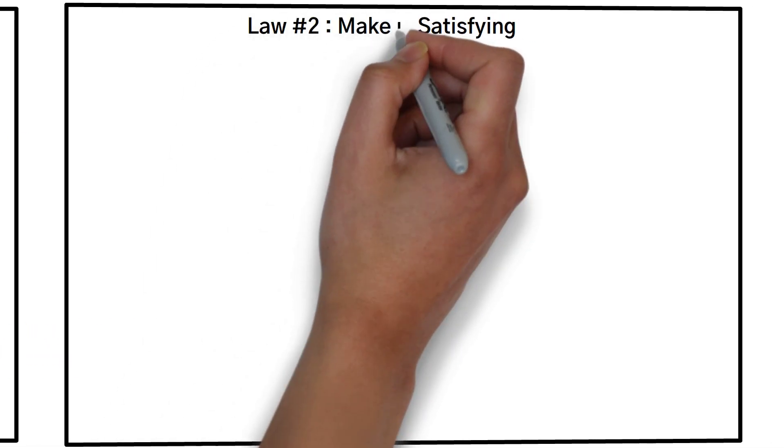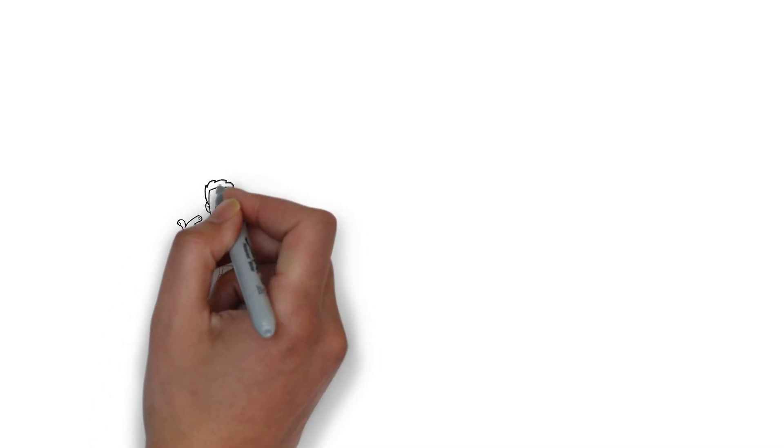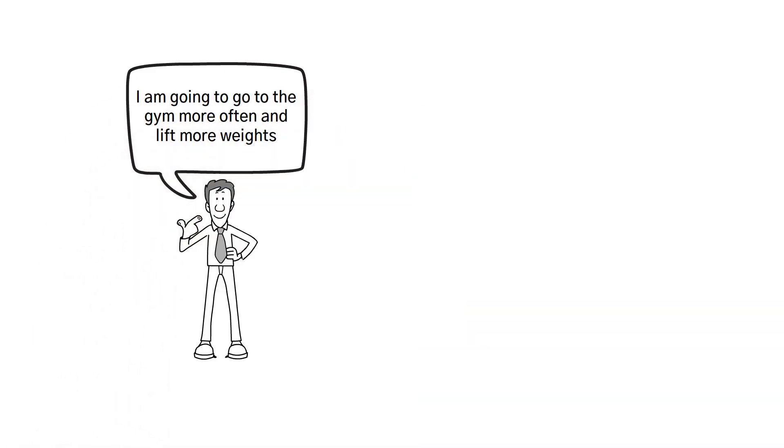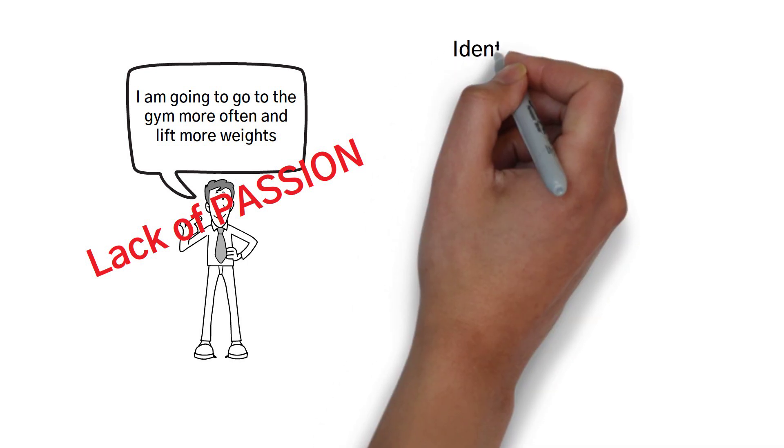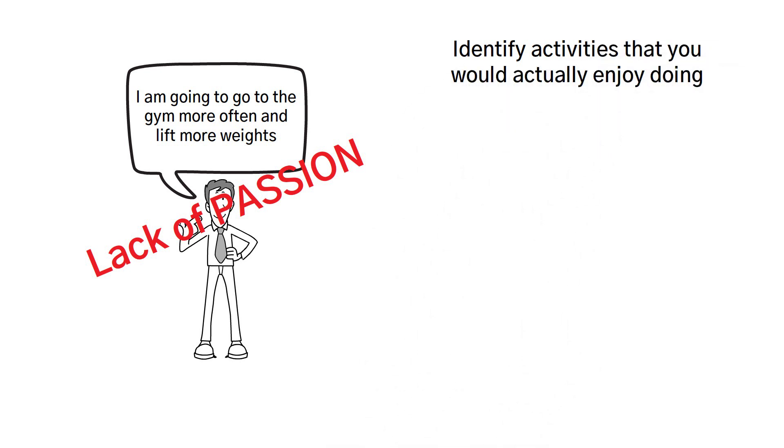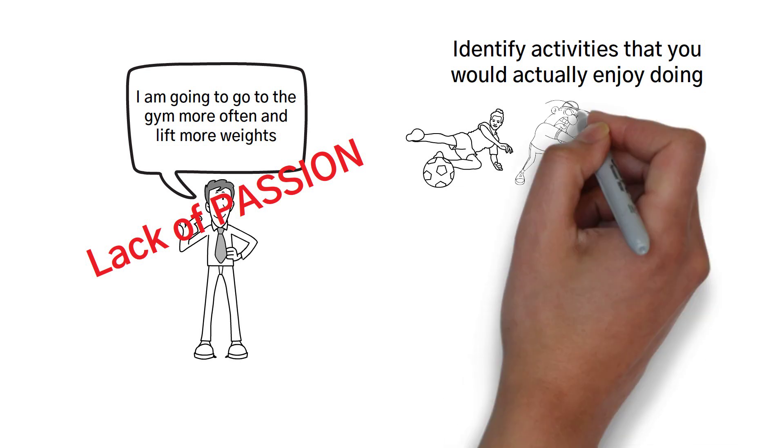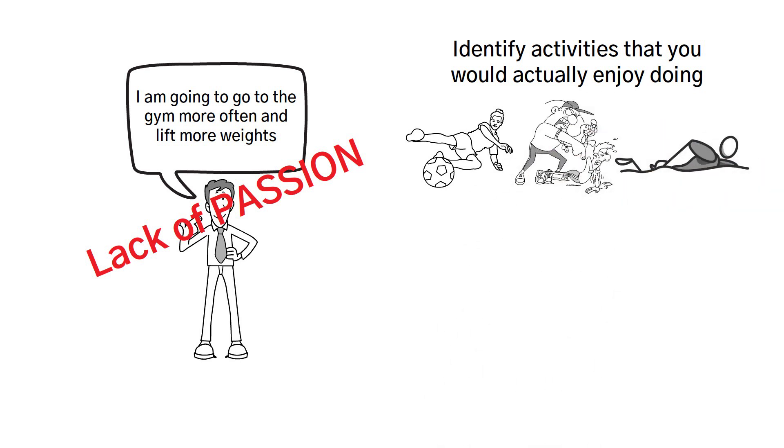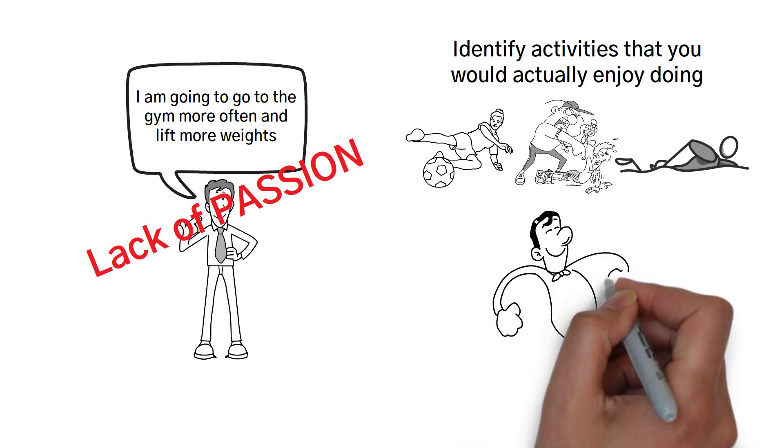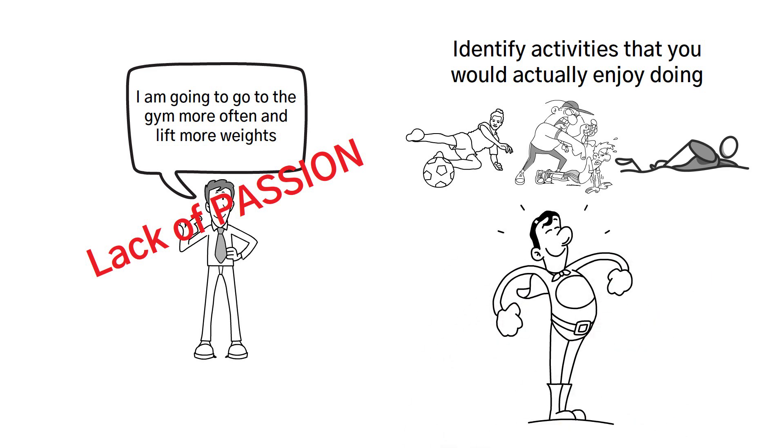Law number two is to make it satisfying. Example, if you're trying to become fitter in life and telling yourself I'm going to go to the gym more often and lift more weights, but if you lack the passion to do just that, then you are not going to achieve the change you are seeking. Instead, try identifying activities that you would actually enjoy doing like playing soccer, joining a workout program, swimming, things that you enjoy. This way, it will become more likely for you to achieve your goal and be satisfied with your effort in the process.